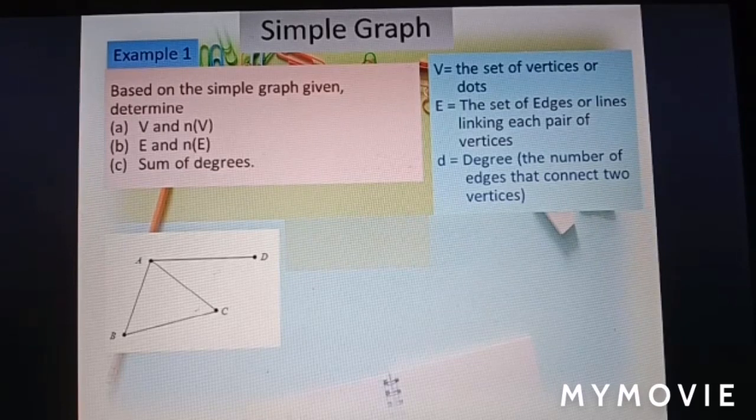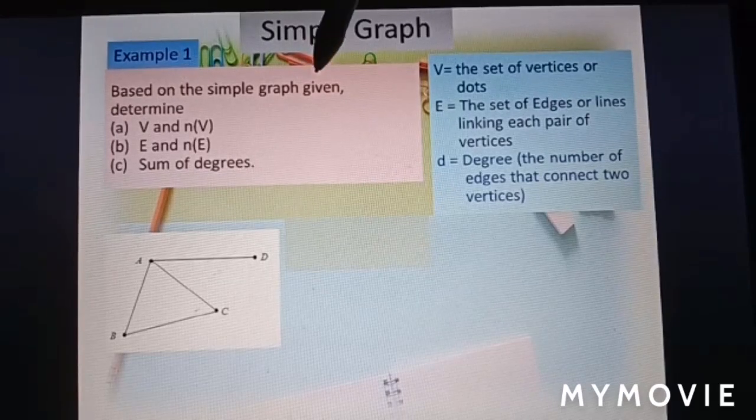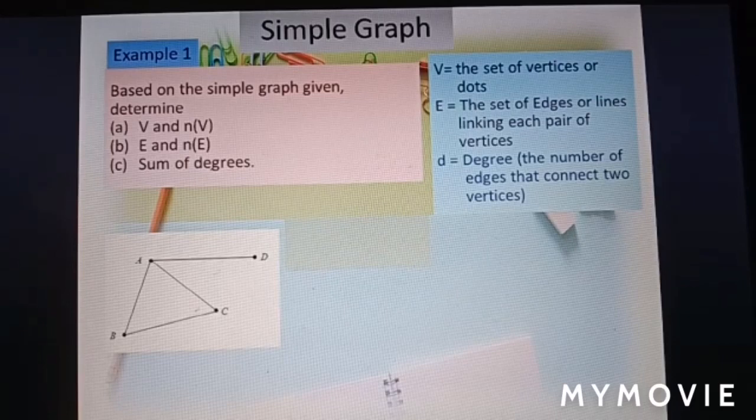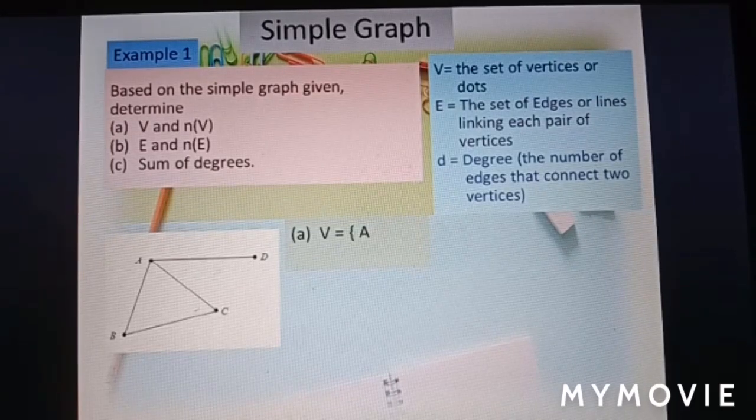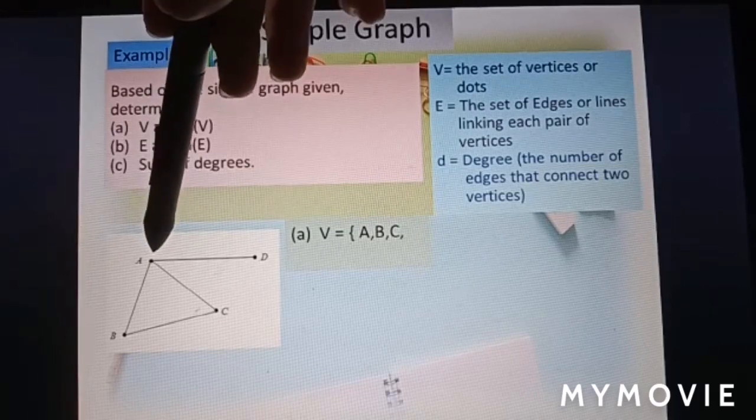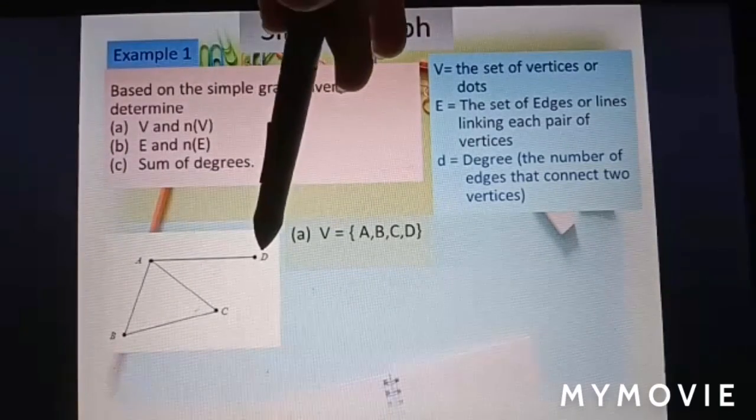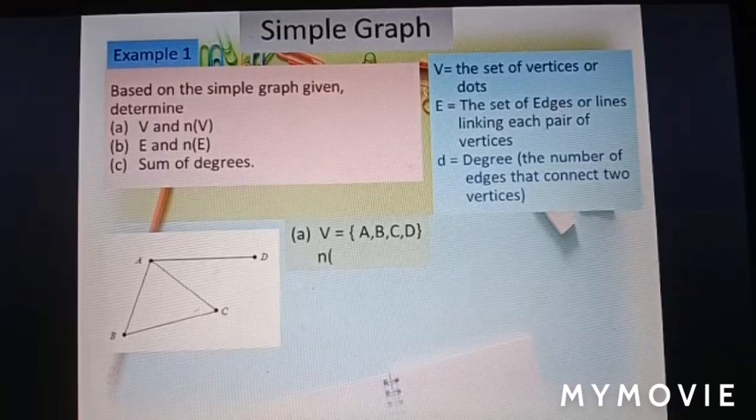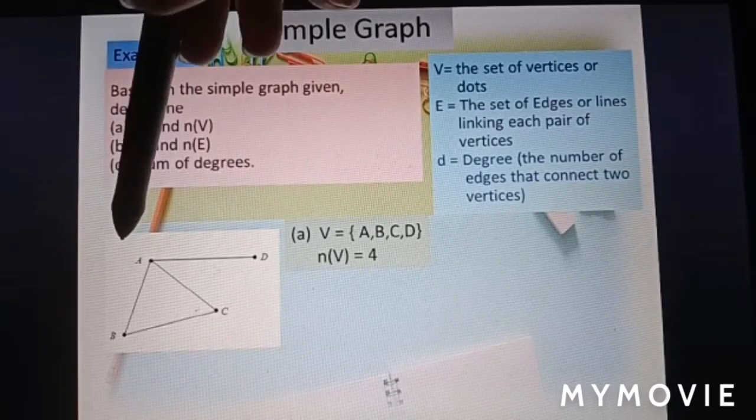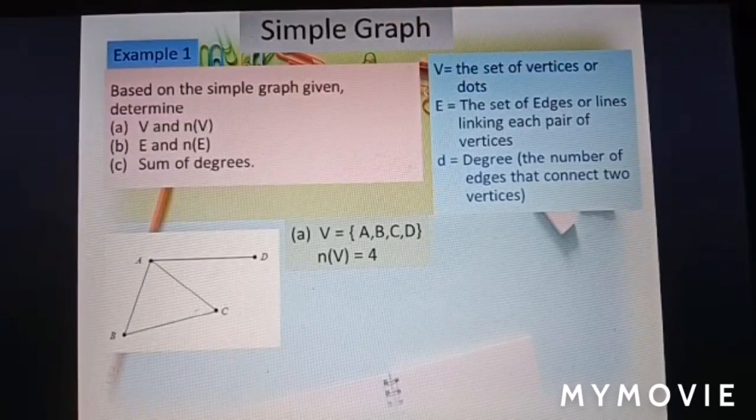Now we look at example 1. Based on the simple graph given, determine V and number of V. V is set of vertices. So from here we have A, B, C, and D. Number of V, 1, 2, 3, 4. So equal to 4.